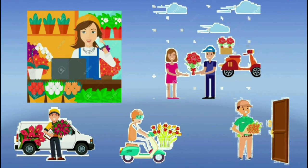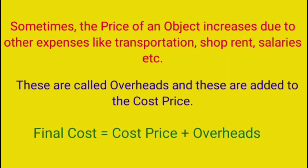Children, now tell me, is the cost price of the bouquets going to be the same? No. The cost price of the bouquets is going to be increased due to some expenses like transportation, rent, salaries, etc. Now let us see what these expenses are called and how to find profit and loss. Sometimes the price of an object increases due to other expenses like transportation, shop rent, salaries, etc. These are called overheads and these are added to the cost price. To get the final cost, overheads are added to the cost price.